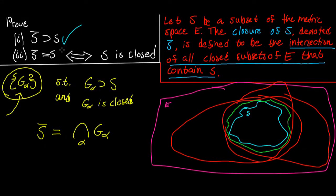In the previous video, we showed that the set S is always going to be contained in its closure — S is always contained in the closure of S. But in this video, we're going to show that S is equal to its closure if and only if S is closed.